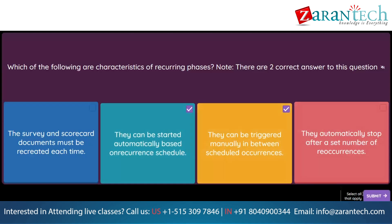Question. The SAP Ariba supplier management portfolio consists of which solutions? Note, there are three correct answers. Option 1: SAP Ariba Supplier Risk. Option 2: SAP Ariba Supplier Information and Performance Management. Option 3: SAP Ariba Supply Chain Collaboration. Option 4: SAP Ariba Supplier Lifecycle and Performance. Option 5: SAP Ariba Network Supplier Services.